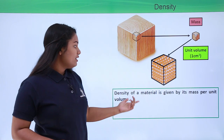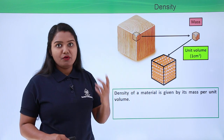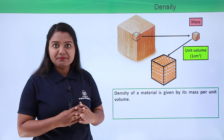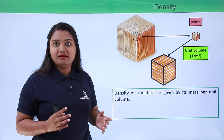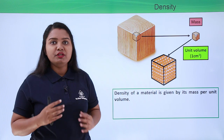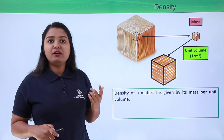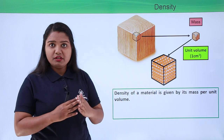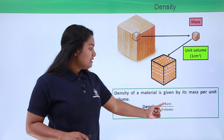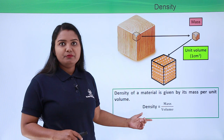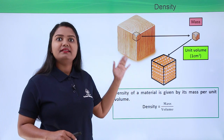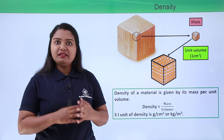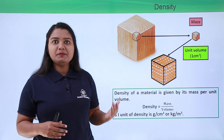The density of a material is given by its mass per unit volume — that is, when we take a unit volume of a particular object, how much mass is contained in it. Density is a property of the object given by the formula: density = mass divided by volume. The SI unit of density is kg per meter cube, and it is also measured in grams per centimeter cube.